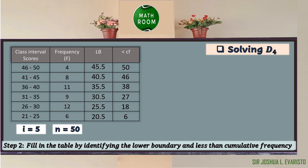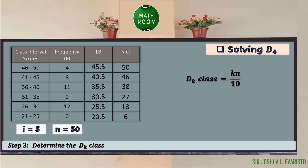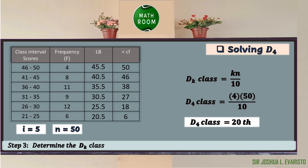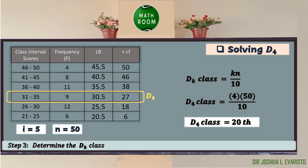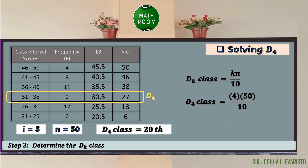Step 3: Determine the D sub k class before computing the value of D sub k. The formula is D sub k class equals k times n over 10. Substituting the given values, D sub 4 class equals 4 times 50 over 10. Since k equals 4 and n equals 50, we get 4 times 50 equals 200, divided by 10, giving us 20. Since 20 is between 18 and 27, we choose the higher value, 27. Hence, the D sub 4 class is found in the third class.